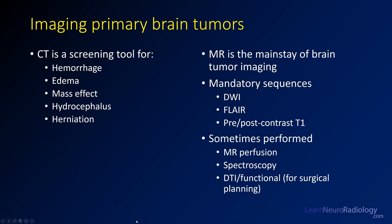When imaging brain tumors, CT is primarily a screening tool — useful for detecting hemorrhage, mass effect, and other significant immediate findings — but it is not optimal for tumor evaluation, even with contrast. MRI is the mainstay of tumor imaging. The mandatory sequences needed to evaluate a tumor are diffusion-weighted imaging, FLAIR, and pre- and post-contrast T1.